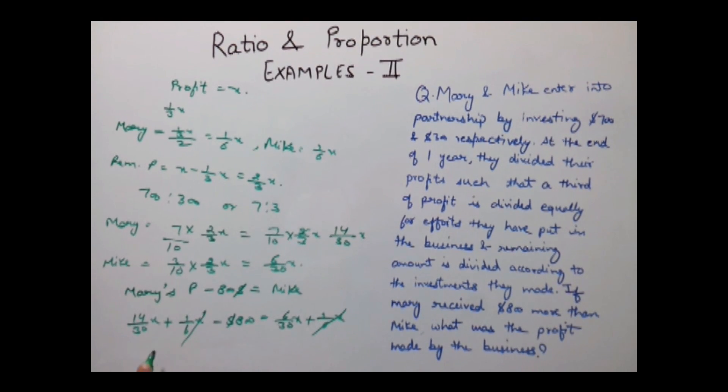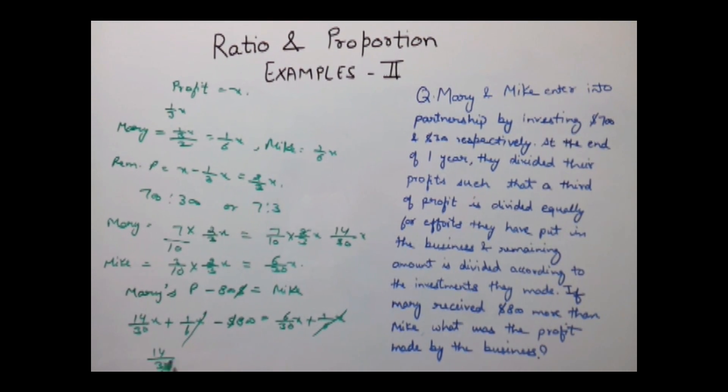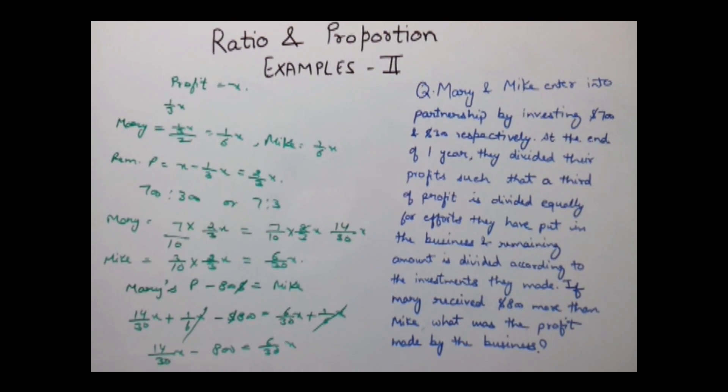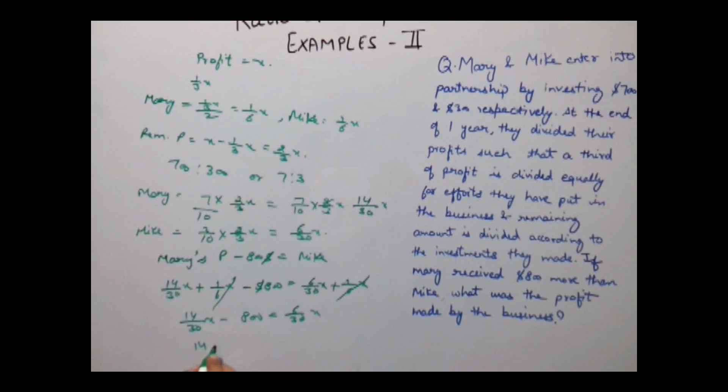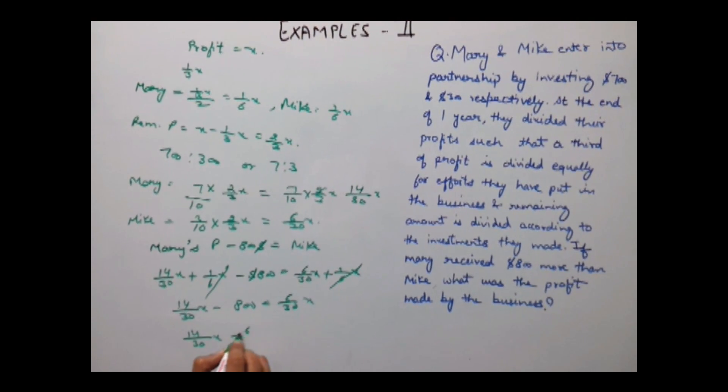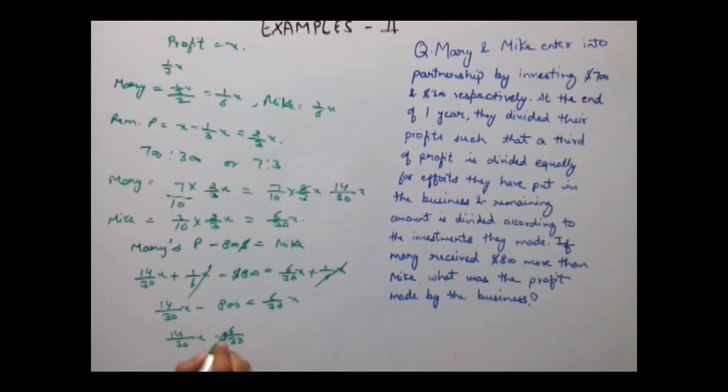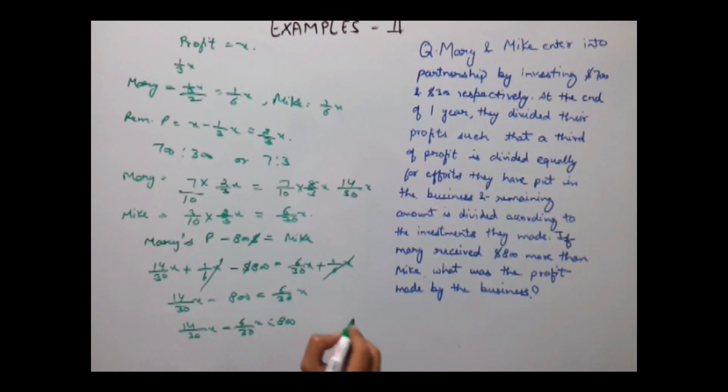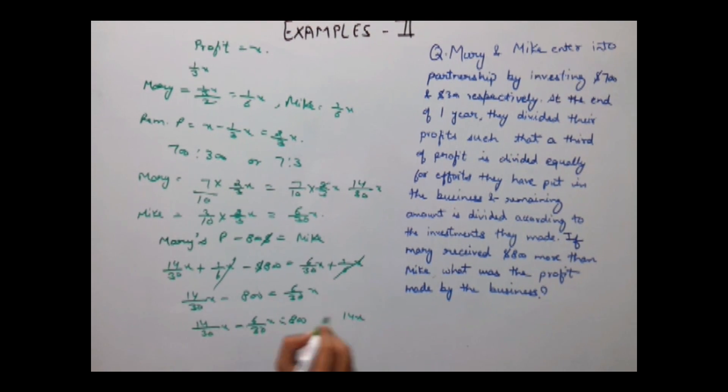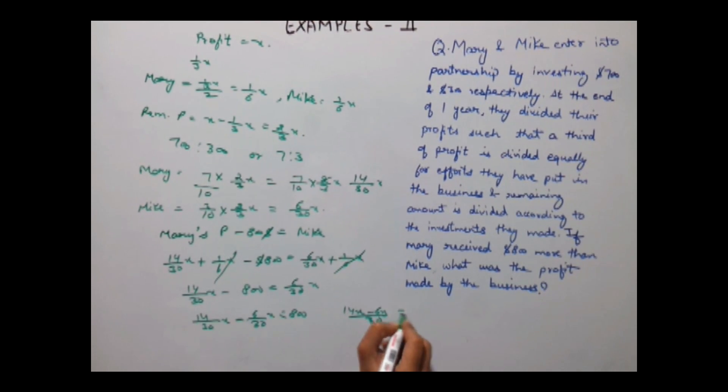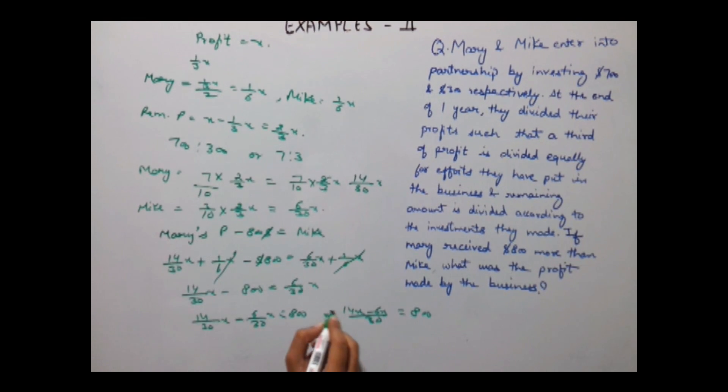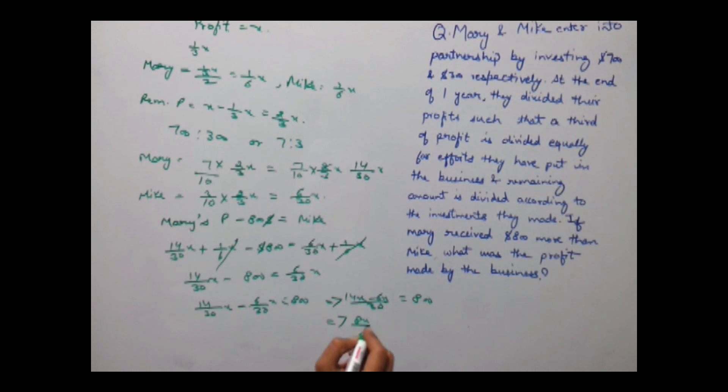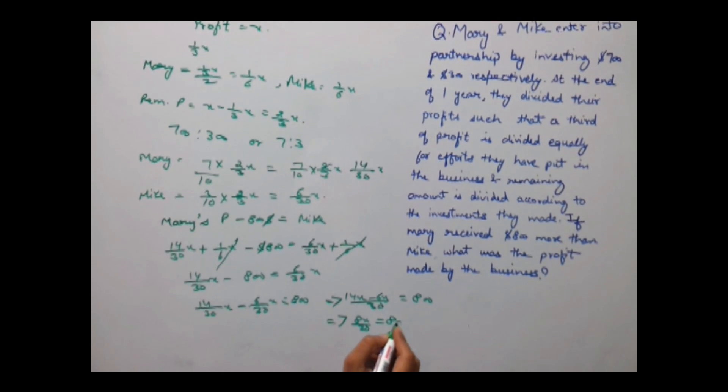Cancel 1/6 X from both sides. 14/30 X minus 800 equals 6/30 X, which will be 14/30 X minus 6/30 X equals 800. So 8/30 X equals 800.